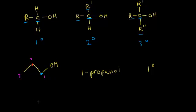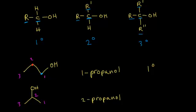Let's look at a similar molecule — still three carbons, but this time the OH is on the middle carbon. We number it: carbon 1, carbon 2, carbon 3. This is a three-carbon alcohol, so it's also propanol, but now the hydroxyl group is on carbon 2. We write 2-propanol, which is the IUPAC name. This is also called isopropanol or rubbing alcohol — it's all the same stuff.